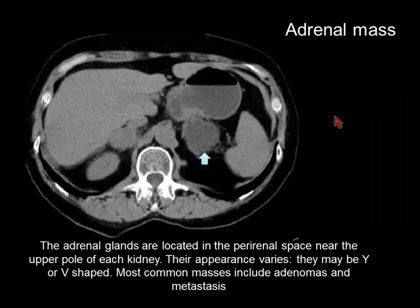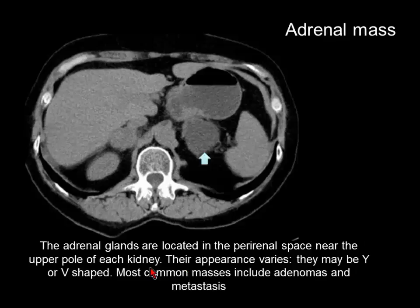An adrenal mass is located in the perirenal space near the upper pole of the kidneys. You have to look for them, whether they are enlarged. On PET scan, look whether there is increased uptake — whether it is focal or diffuse, Y-shaped or V-shaped. It may include adenomas or metastasis, especially when doing a PET-CT scan for patients with lung cancer, as the adrenal glands are a common site for metastasis.